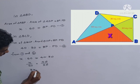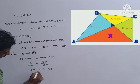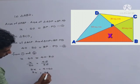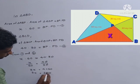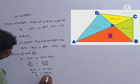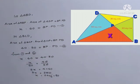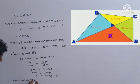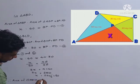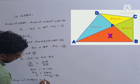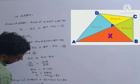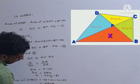Cross-multiplying: 3x equals 4 times 60, so 3x equals 240, therefore x equals 240 divided by 3, which equals 80. The area of cyclic quadrilateral ABCD equals 60 plus 30 plus 40 plus 80, which equals 210 centimeters squared.